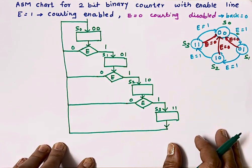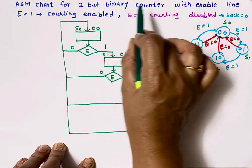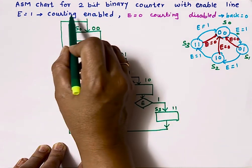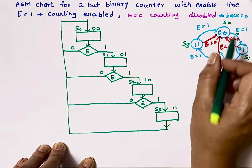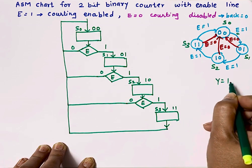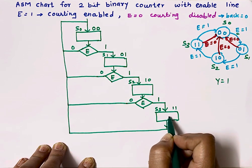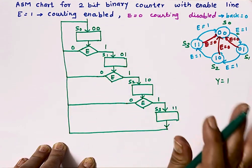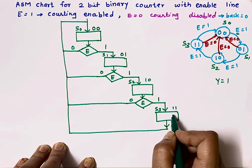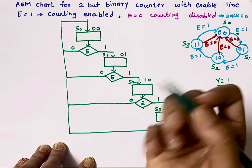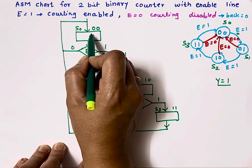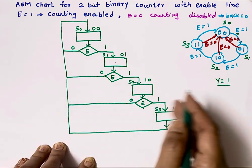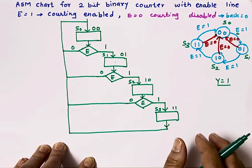So this is the ASM chart for a 2-bit binary up-counter with enable input. Now, if it is specified that for minimum count the output is 1, or for maximum count the output is 1, then you can write y equals 1 inside that state box and y equals 0 in the other state boxes. If output is not specified, then you can keep the state boxes empty.